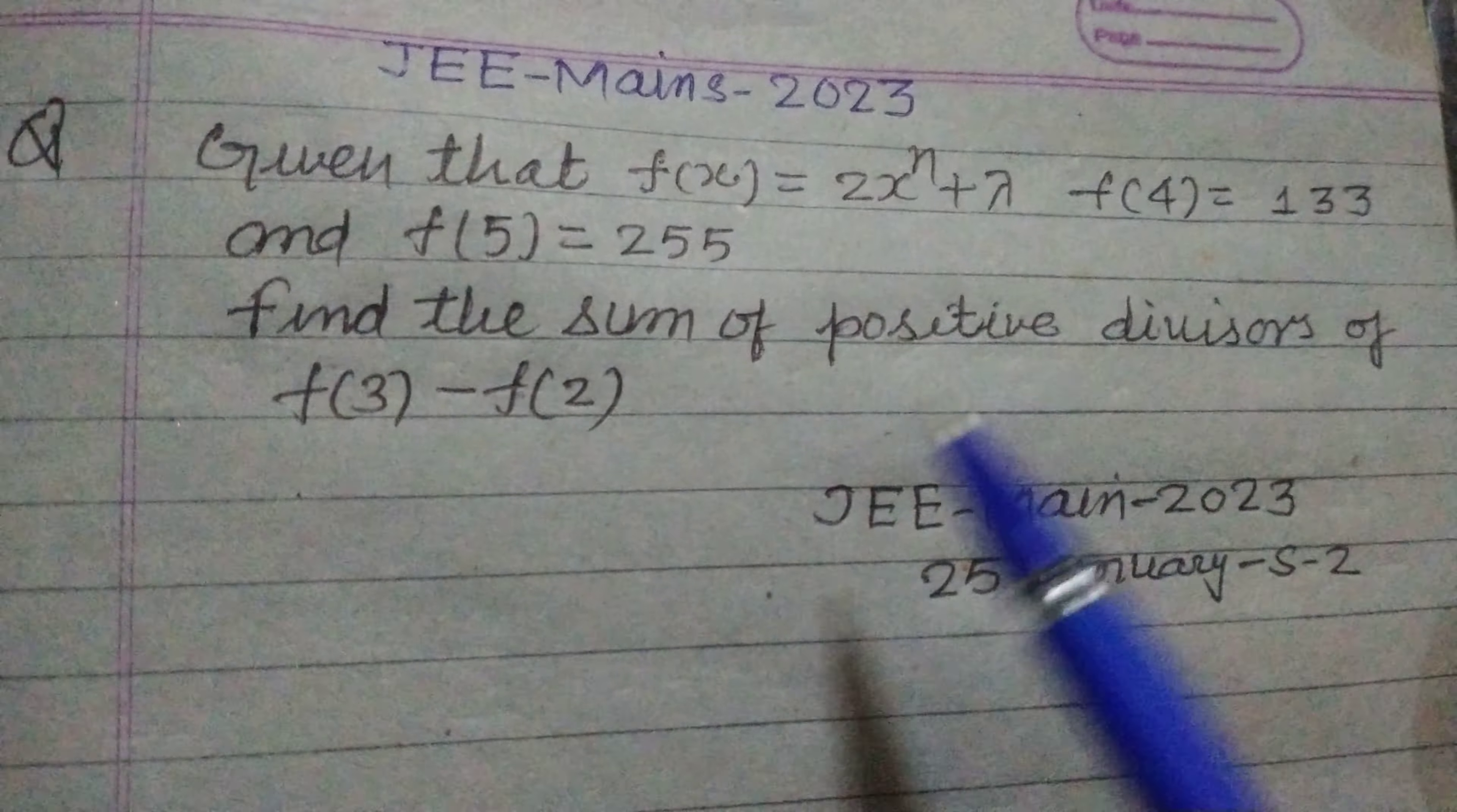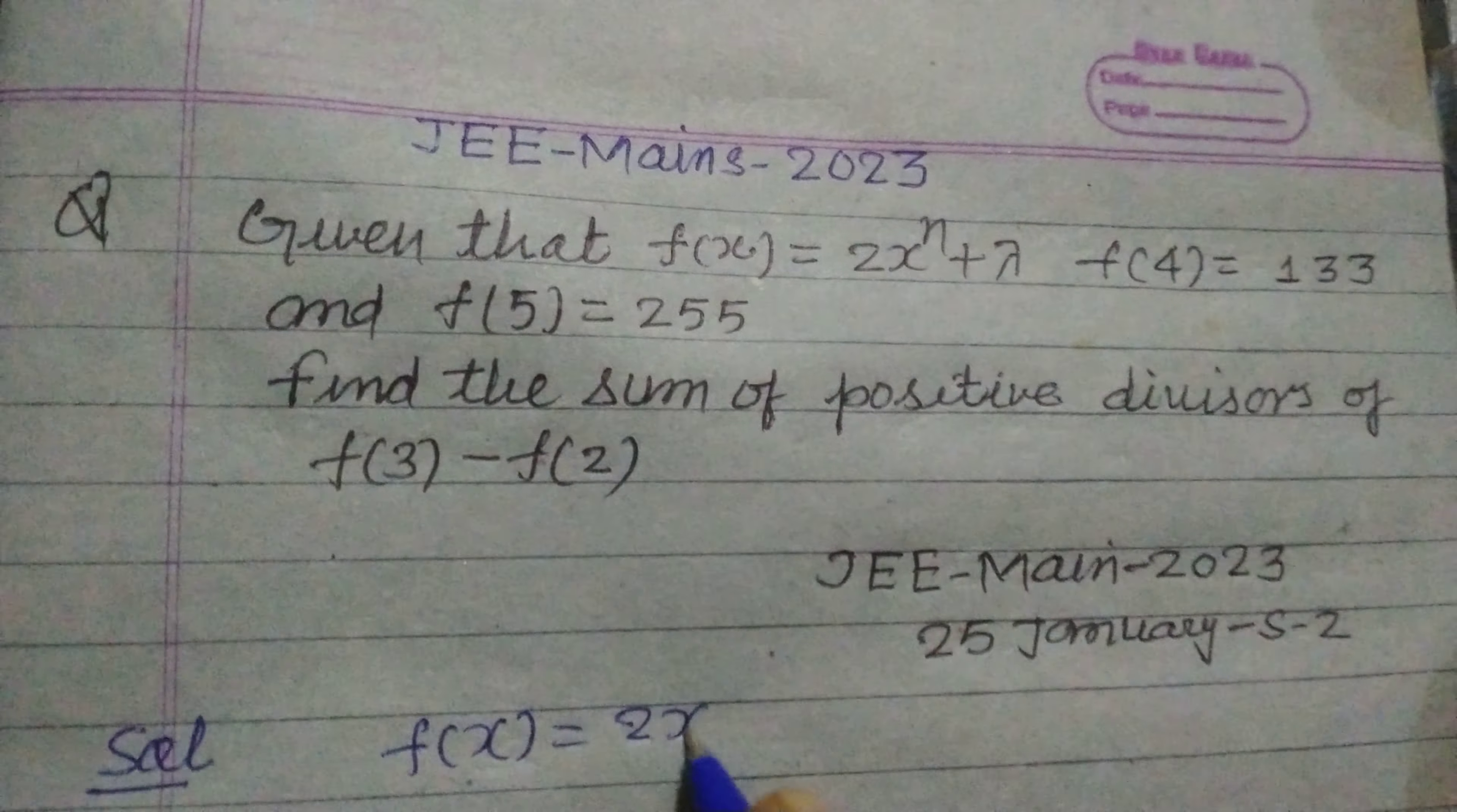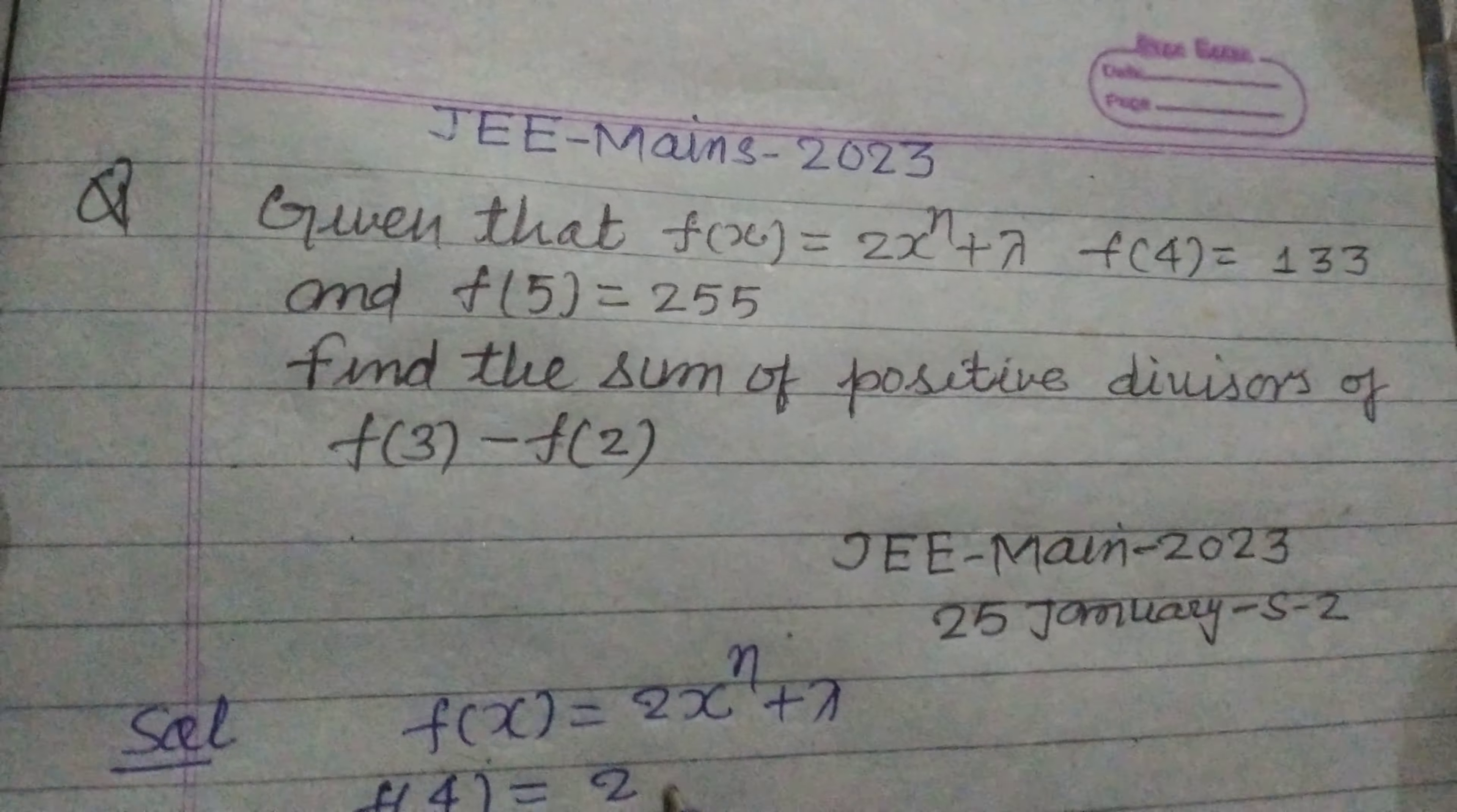Find the sum of the positive divisors of f(3) - f(2). So students, here it is given that f(x) = 2x^n + λ. Here we put f = 4, x = 4, then we get the value of this function.